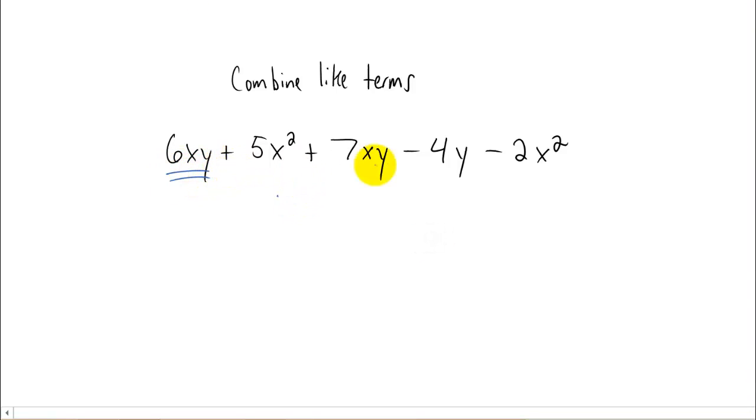And given a quick glance at this thing, you'll notice that 6xy and 7xy have the same variables with the same powers. We're allowed to combine those two together by just adding the coefficients.